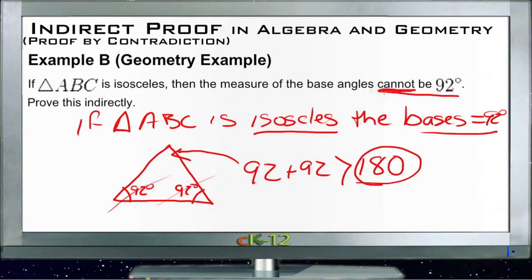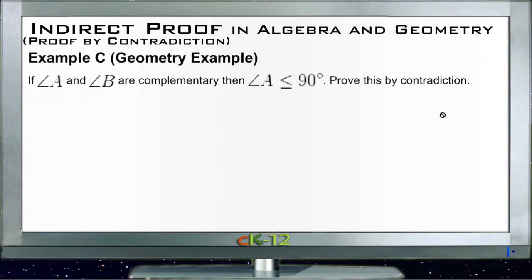Now finally for Example C, our original statement is if angle A and angle B are complementary—remember that complementary means equal 90 degrees—then angle A must be less than or equal to 90 degrees by itself. We need to prove this by contradiction, so we change our statement to say the then part, then we change the then part to be the opposite.